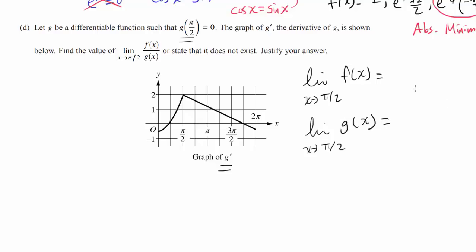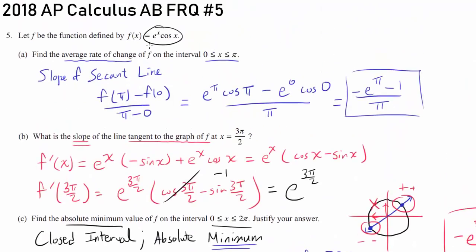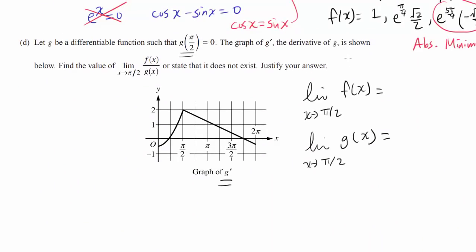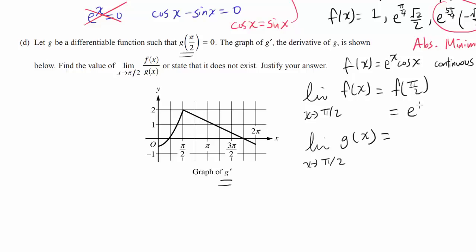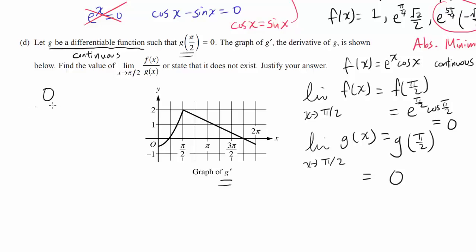Let's look at the limit of the top and bottom separately. The limit as x approaches pi over 2 of f of x: since f of x equals e to the x cosine of x is continuous, we can plug in pi over 2, giving e to the pi over 2 times cosine of pi over 2, which is 0. For the bottom, since g is differentiable it is also continuous, so the limit as x approaches pi over 2 of g of x equals g of pi over 2, which is 0. We get the indeterminate form 0 over 0, so we can apply L'Hôpital's Rule.